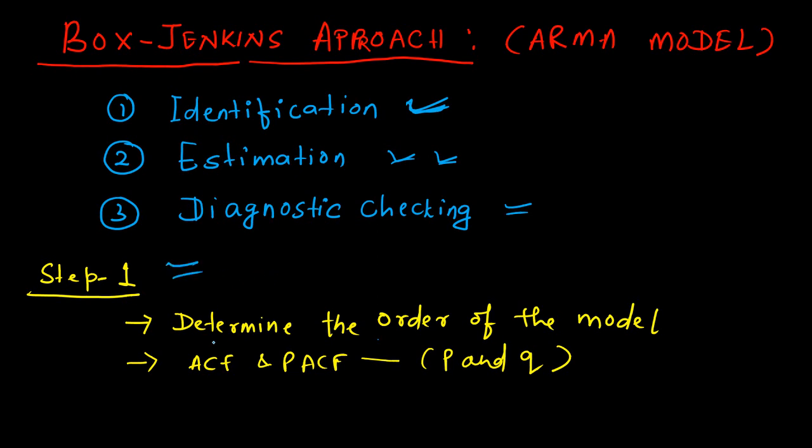In the first step, you determine the order of the model. Let's say we are trying to build an ARMA model. We have two parameters here, P and Q - the AR component and the MA component. So what are the orders of these components, AR and MA?